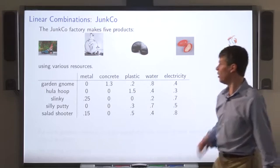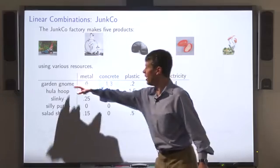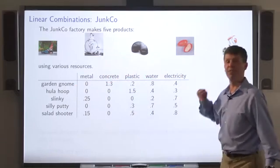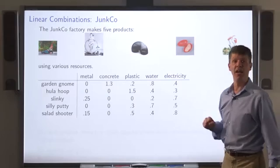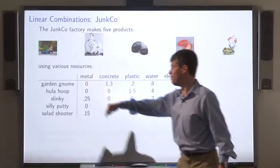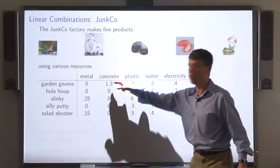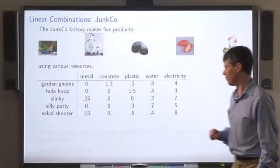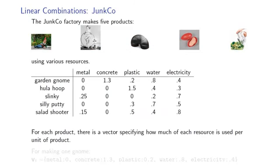Here's a table that specifies for each product how much it uses in each of five resources. For example, making a garden gnome takes 0 units of metal, 1.3 units of concrete, and so on. For each product, we can write down a vector that specifies how much of each resource it uses.